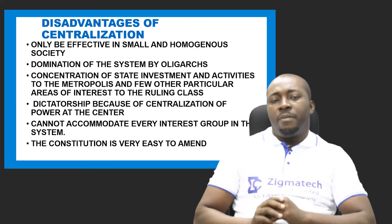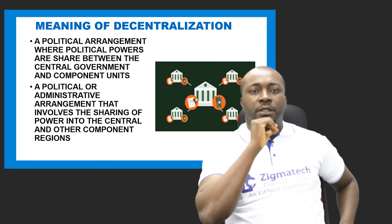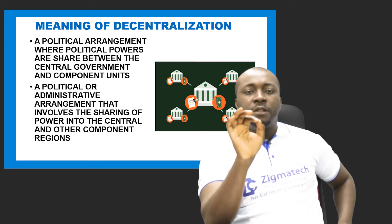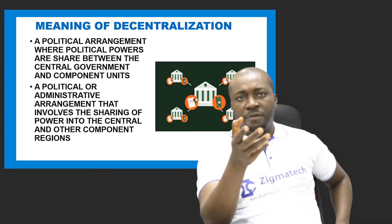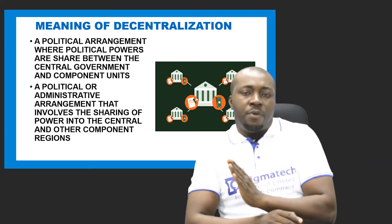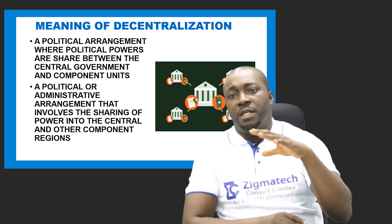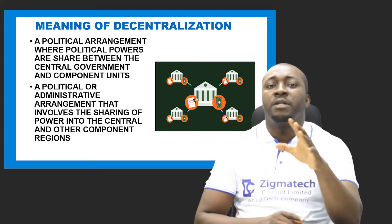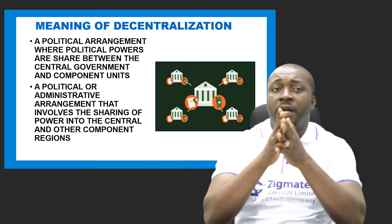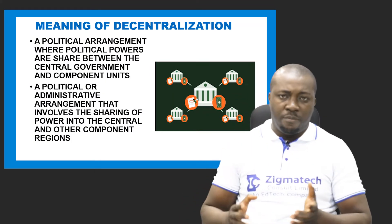Those are the disadvantages associated with centralization of authority. Now let's look at the meaning of decentralization, which is the opposite of a centralized system. Decentralization is a political arrangement or administrative system where political powers are shared between the central government and the component units. You have levels of government — the central government and the component units, such as state governments — which is what is obtainable in a federal system of government.